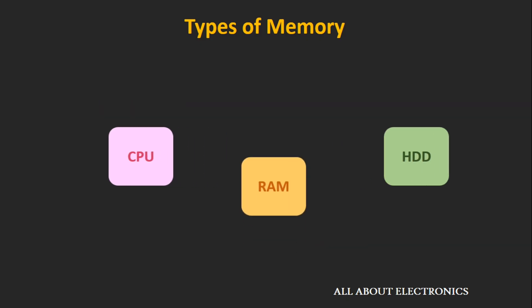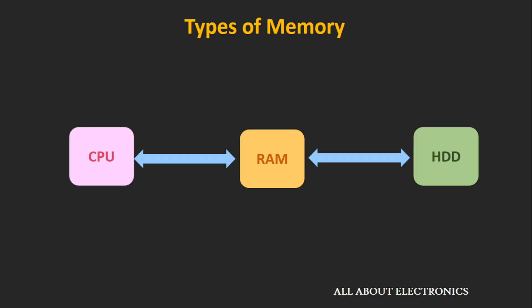That is where the second kind of memory comes into the picture — Random Access Memory (RAM). This RAM is faster compared to the hard disk drive and can provide data to the CPU at a much faster rate. But it is still slower than the CPU clock speed. The typical speed of RAM is in the range of 400 MHz up to 800 MHz. However, newer generation RAMs like DDR3 and DDR4 can operate at a much faster rate, like 1600 MHz or up to 2100 MHz.